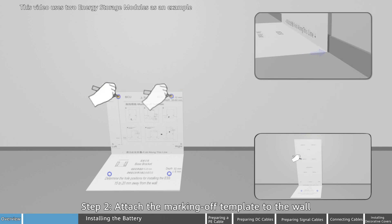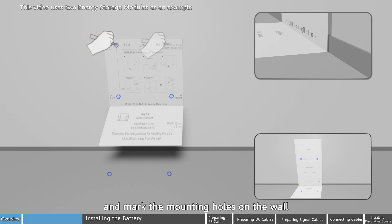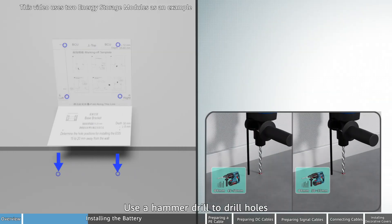Step 2: Attach the marking off template to the wall and mark the mounting holes on the wall. Use a hammer drill to drill holes.